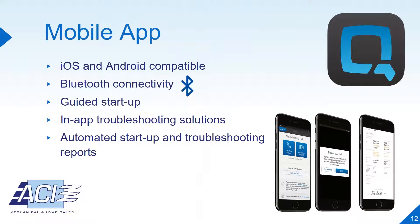Q-Link's mobile app is iOS and Android compatible with monitoring via Bluetooth connectivity. It offers a simple and intuitive user experience that expedites the setup and support process. It has the ability to save and store device settings along with creating configuration templates. The app has over-the-air firmware updates and a guided startup, which simplifies the difficult startup process of other VFDs. The troubleshooting solutions through the app are also fantastic, as there is sequential app support and live support if needed. By providing remote monitoring and control through the app, it enhances safety by minimizing the need to interact with the drive. Lastly, the app produces automated startup and troubleshooting VFD reports.